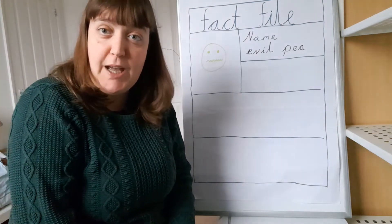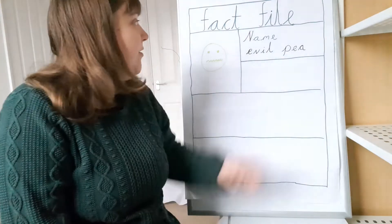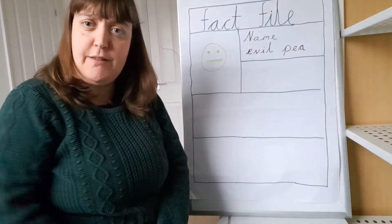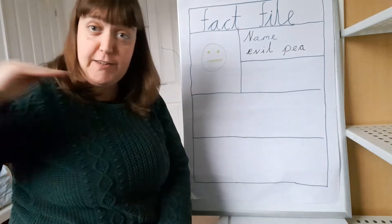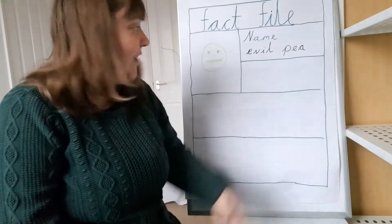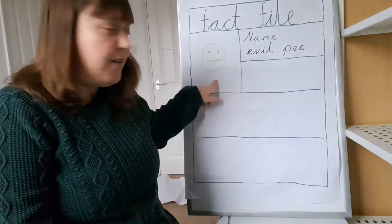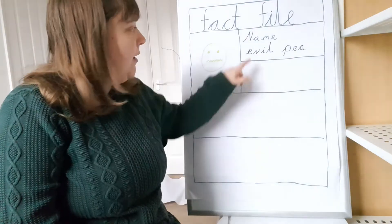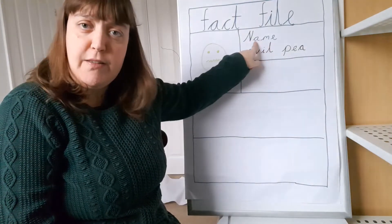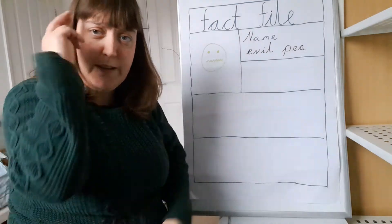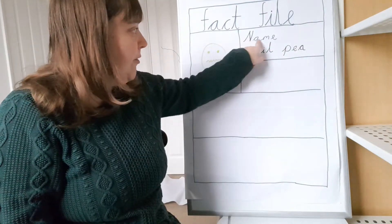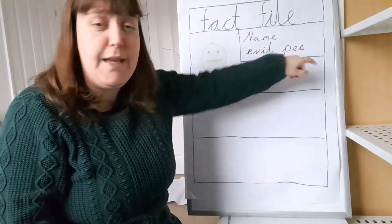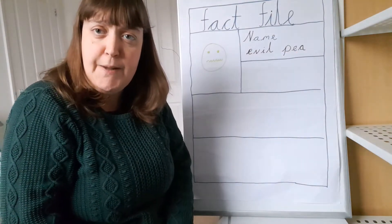Right, first we're going to recap what we already learned. Do you remember this? It says 'fact file.' Can you do it? Fact file! Fantastic! Can you remember here that we drew a picture of the evil P, and here what did we write? We wrote his name. Name, and then evil P, because that's his name.